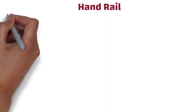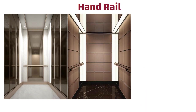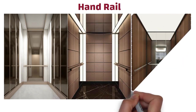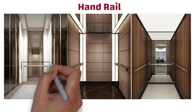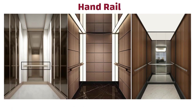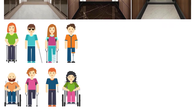Handrail. The elevator car in most cases is provided with a handrail on one side, two sides, or on all sides of the cabin. At least one side of the car has a handrail installed, which can be used by passengers for support, including persons with disabilities.